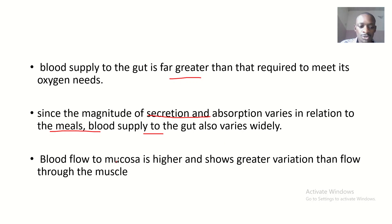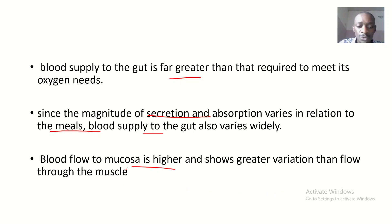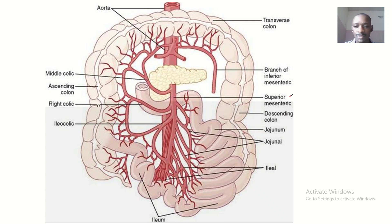Blood flow to the mucosa layer is higher and shows greater variation than blood flow through the muscular layer. Recall the layers of the GIT using the mnemonic MSMS: mucosa, submucosa, muscularis, and serosa.